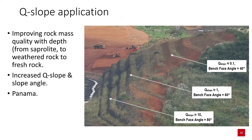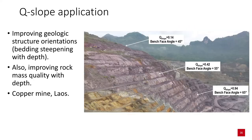Q-slope application: improving rock mass quality with depth — from saprolite to weathered rock to fresh rock — corresponds to increasing Q-slope values and steeper slope angles, as seen in this example from Panama. Similarly, when there are improving geological structure orientations, for example bedding steepening with depth alongside improving rock mass quality, Q-slope values increase and so does the bench-face angle, in this example from a copper mine in Laos.